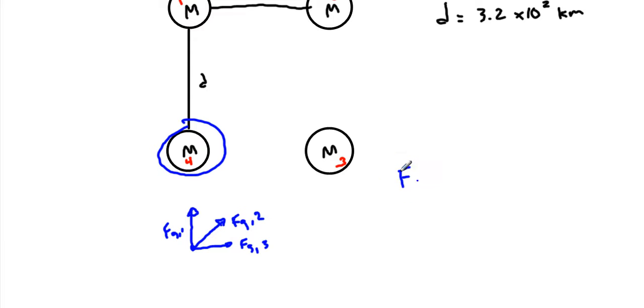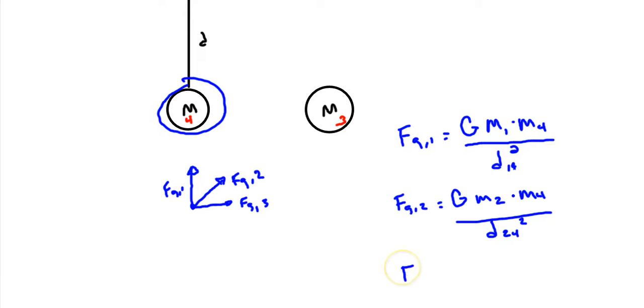When we look at these, we know that the force of gravity from object 1 is going to equal the gravitational constant times m1 times m4, because we're looking at object 4, divided by the distance between 1 and 4 squared. Similarly, F_g2 is going to equal G times m2 times m4, divided by the distance between 2 and 4 squared. And then F_g3 is equal to G times m3 m4, divided by the distance 3 to 4 squared.